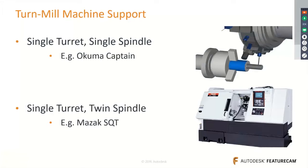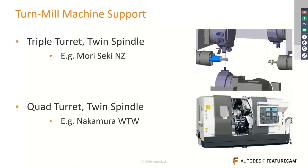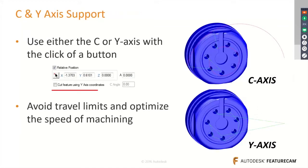FeatureCAM supports turn-mill machines, whether single turret/single spindle or single turret/twin spindle. FeatureCAM allows you to switch between C-axis and Y-axis with a single click, helping you avoid machine limits and optimize machining speed.